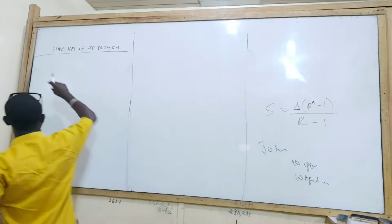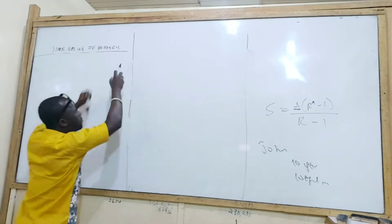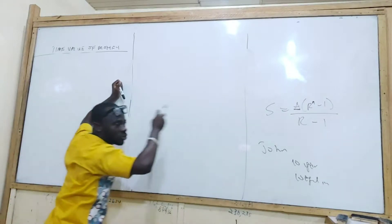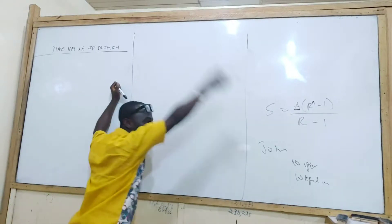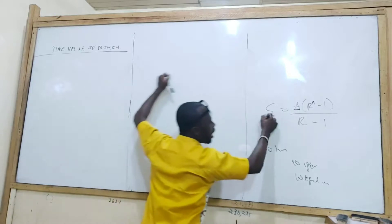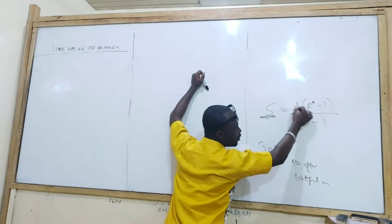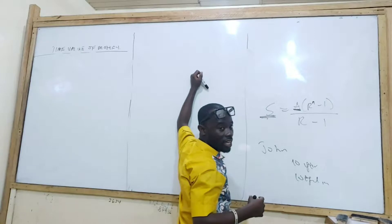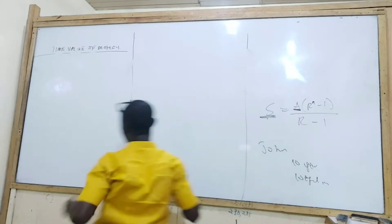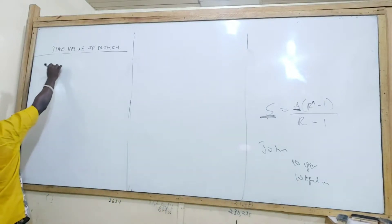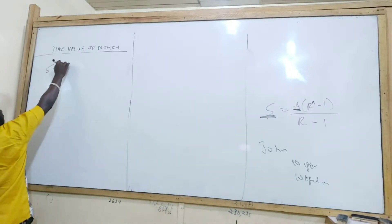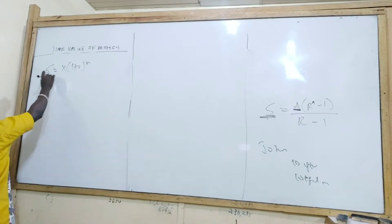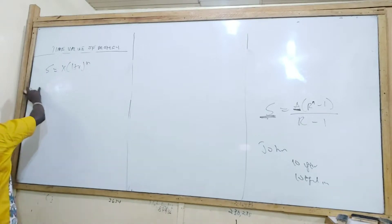We use compound interest to get the money in ten years' time. How much is going to be paid in ten years' time? We use the formula X times (1 + r) exponent n. We calculate and find for A.